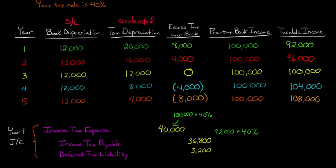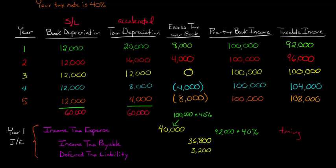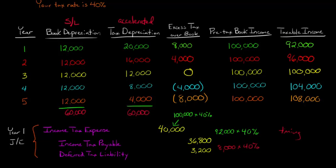Because of the accelerated tax depreciation, we're getting $20,000 of tax depreciation in year one versus only $12,000 of book depreciation. If you add up the total depreciation over all five years, it's $60,000 for both book and tax — it's just a timing difference. At some point in the future, we will pay tax on that extra $8,000 as it reverses. The deferred tax liability of $3,200 is calculated as $8,000 times 40%.